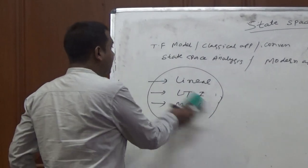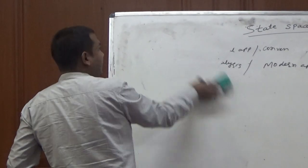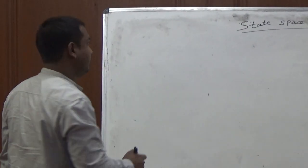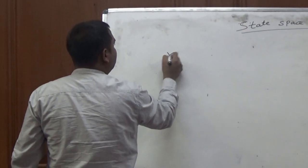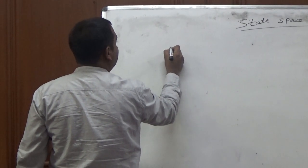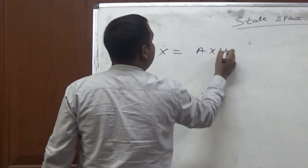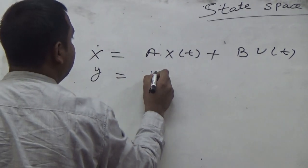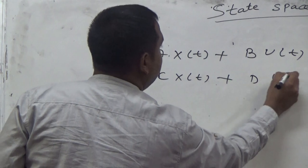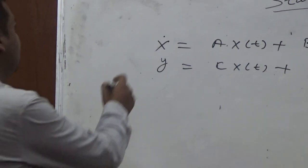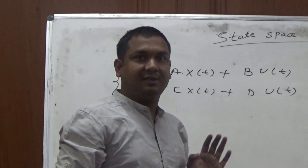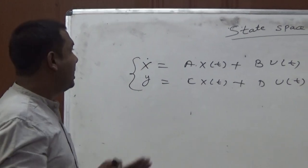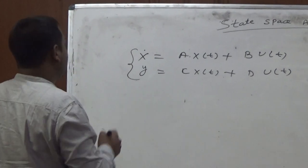Now I am going to derive the relation between the state-space equations and the transfer function model. I will write down the two equations — the state equation and the output equation. The state equation is: x-dot equals Ax(t) plus Bu(t). The output equation is: y equals Cx(t) plus Du(t). These are the two state equations used in state-space analysis to design a system, whether non-linear or linear, having initial energy, or being a multi-input multi-output system.